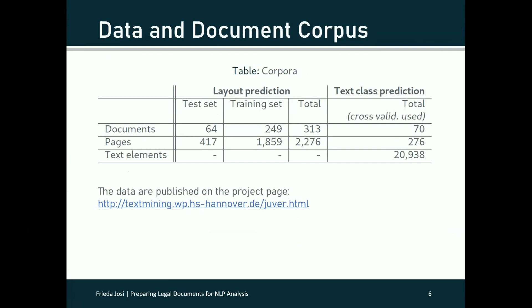The scope of the data used is shown here in the table. We have 46 documents for the layout prediction in the test set and 249 in the training set. These documents consist of 417 individual pages in the test set and 1,859 pages in the training set. For predicting which class a text element has, we use 70 documents consisting of 276 pages. These pages contain 20,938 text boxes. The pages for layout prediction and the text boxes for text box class prediction were manually annotated by two people.